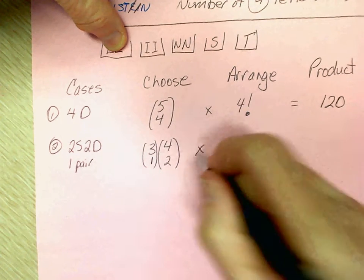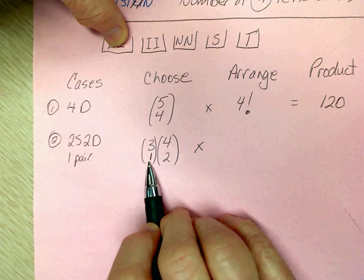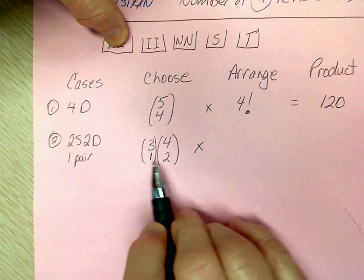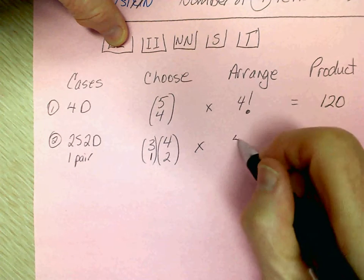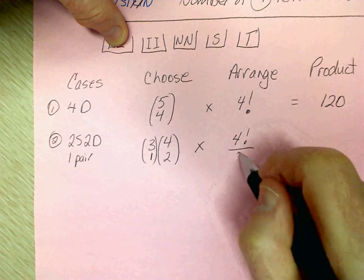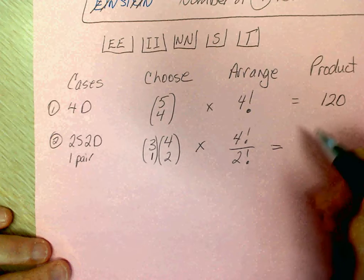And now I can arrange them. So, I have my pair, which is two letters, and I have my two different letters, and I'm going to arrange them, and since two are the same, I have to divide by what's the same.